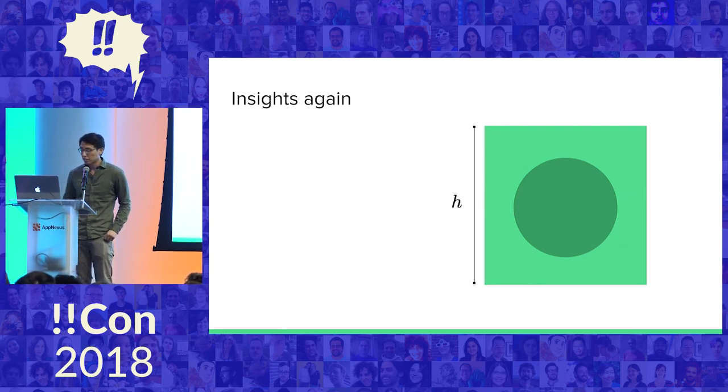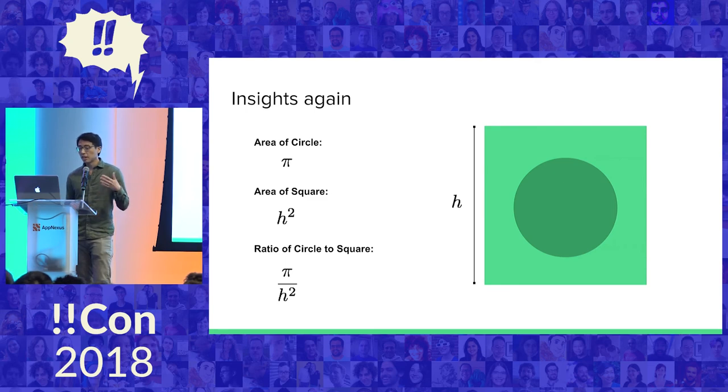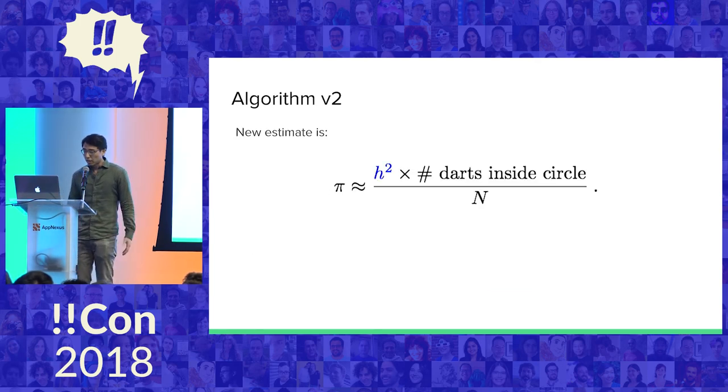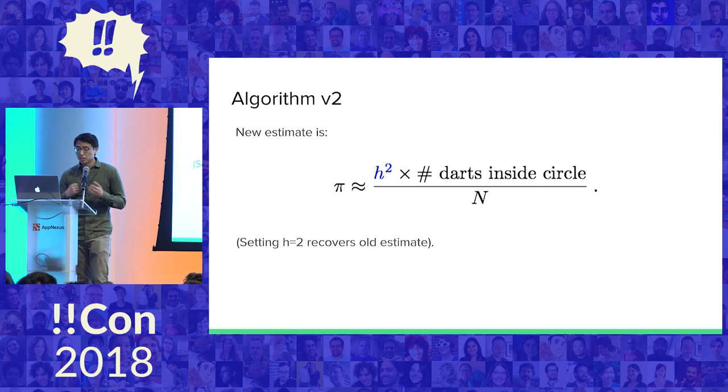We're going to go through the same line of reasoning a little quicker this time. I'm going to set the radius to be 1 because it was unimportant in the calculation. So the area of the circle is now just π. The area of the square is h². The ratio is π over h². Remember, before we had h is 2, so π over 4. This is more general than the analysis we did earlier. The new algorithm is a simple modification: instead of the 4, we change that to h², and plug it into the formula. That gives us the same estimate of pi. Setting h is 2 recovers our old estimate.